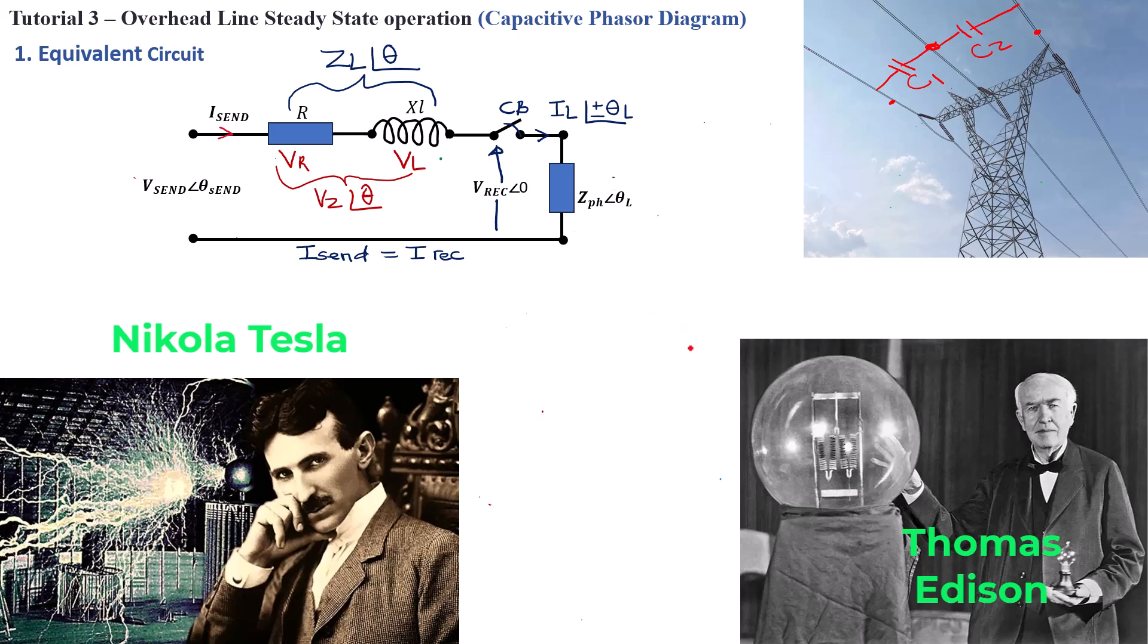Because at the time, Thomas Edison had lots of arguments and inventions around the DC power system, while Nikola Tesla was doing experiments and inventions around AC power transmission. At the end of the day, what was known as the war of currents was eventually won by Nikola Tesla. This is why today we're transmitting our power using alternating current.